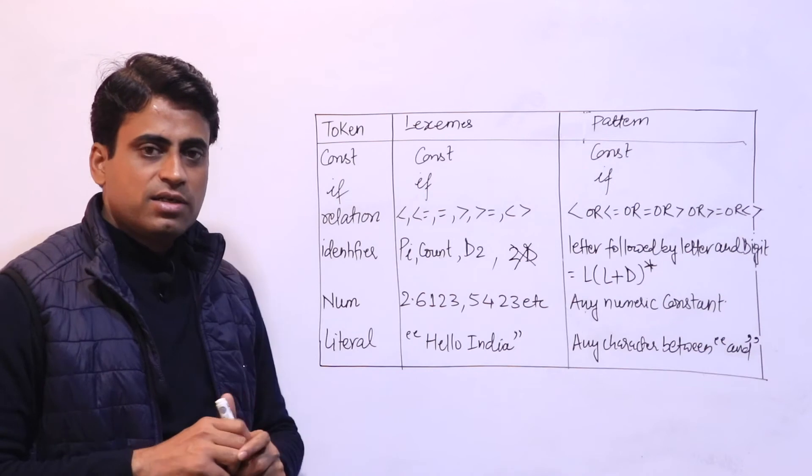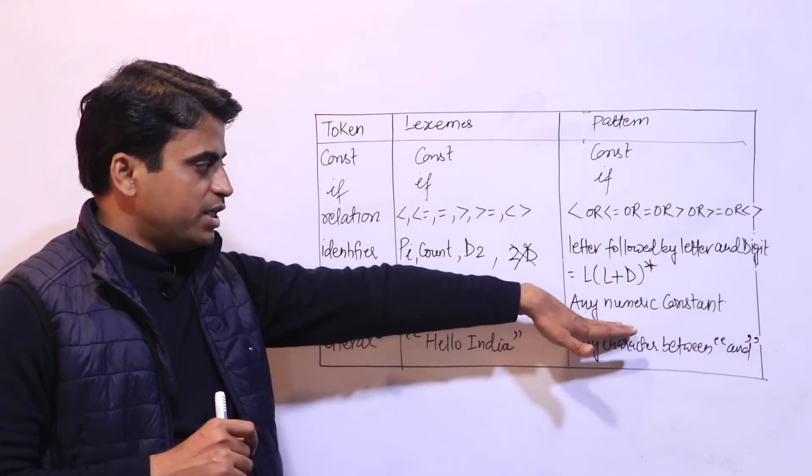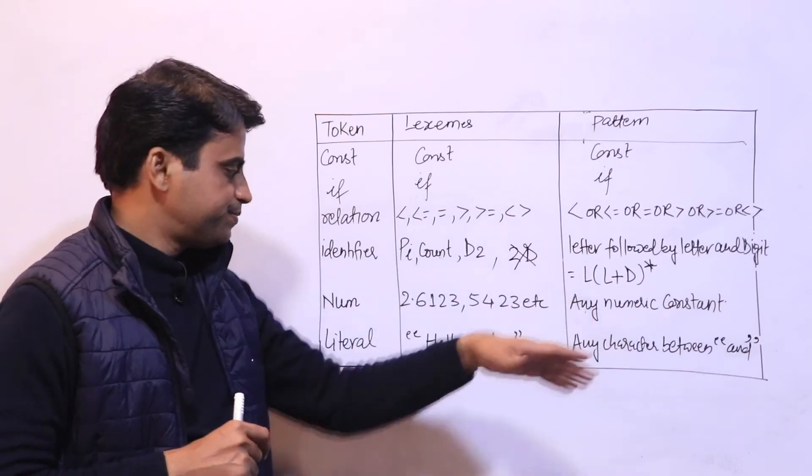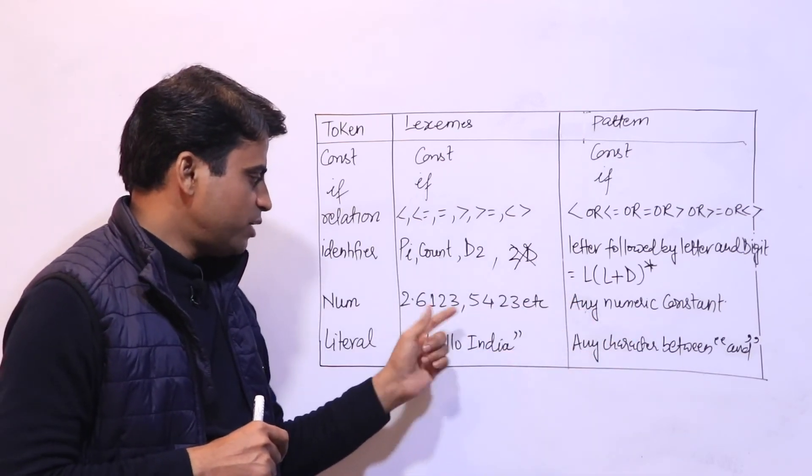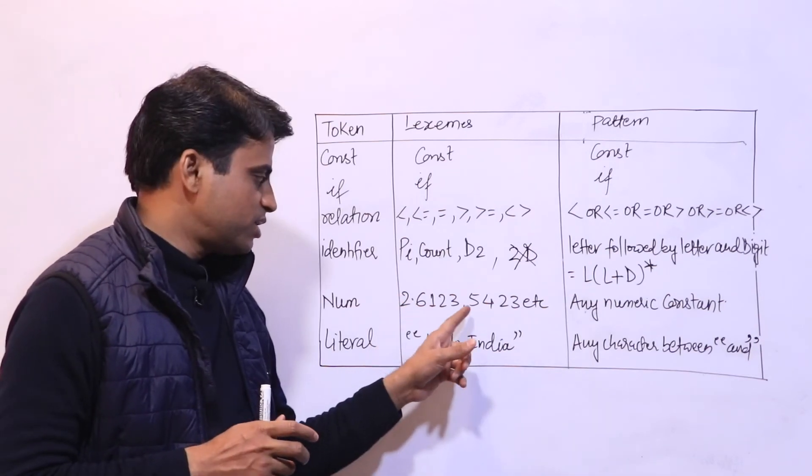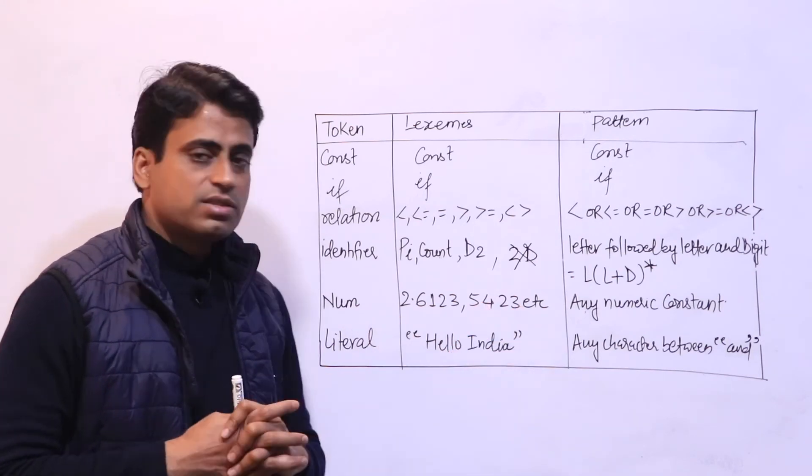Now next, let's see number. What are the rules for number? Any numeric constant. Pattern is any numeric constant is a number. Here any numeric constant like 2.6123, decimal number, or integer number. Any numeric constant is a number.